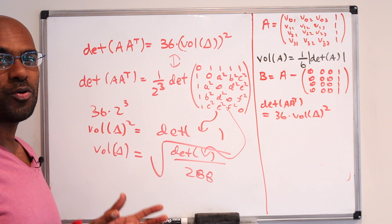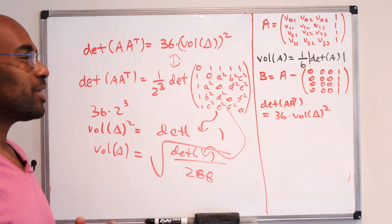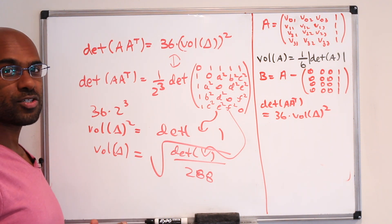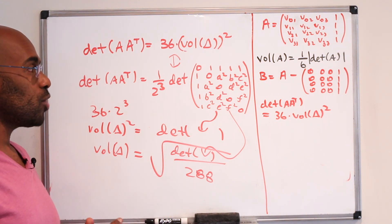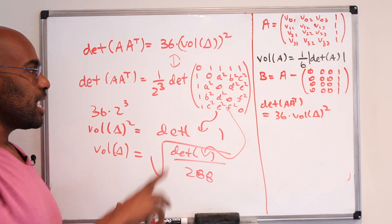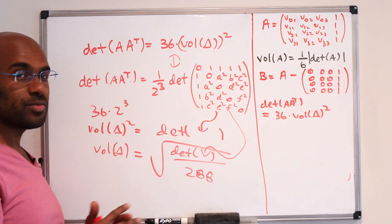So now you have a way to calculate the volume of any tetrahedron if you know its side lengths and can compute some determinants.